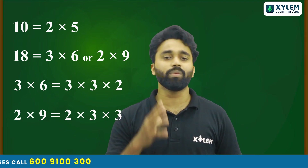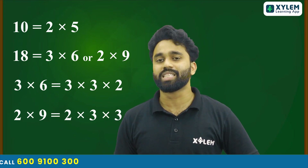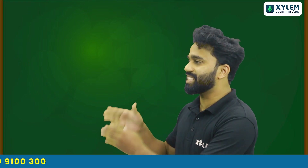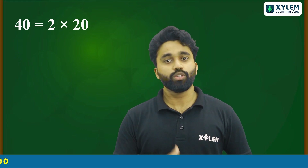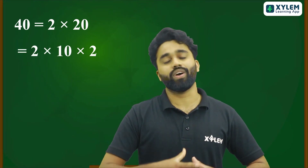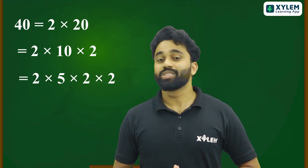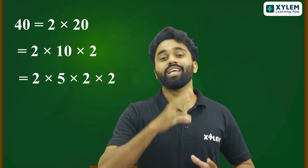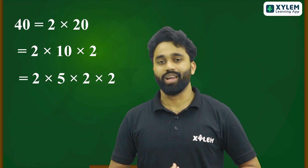Looking at another example: 40. We can write it as 2 into 20. Then 20 divides into 2 into 10, and 10 divides into 2 into 5. So there are three 2's and one 5.